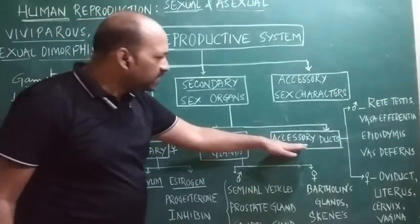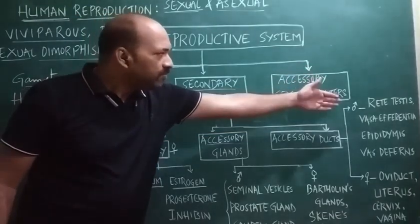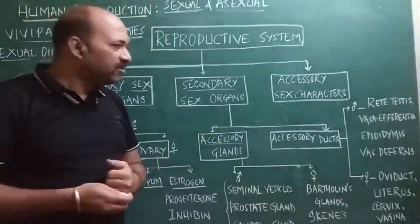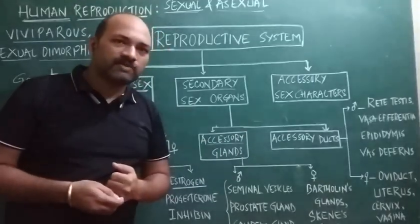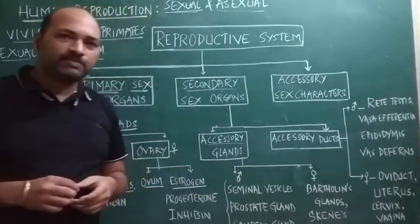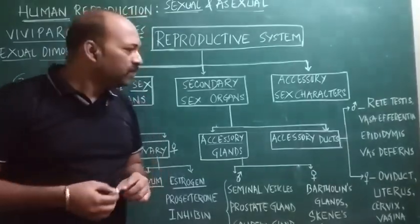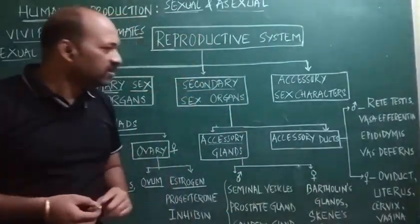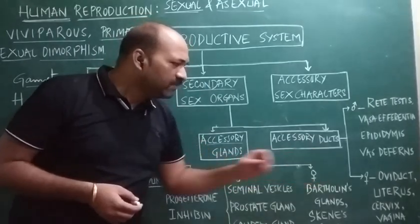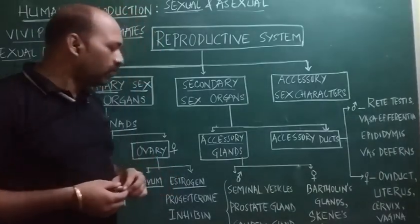Next are the accessory ducts. In the male reproductive system, the accessory ducts consist of the rete testis, vasa efferentia, epididymis, and vas deferens — four ducts which help in the conduction of the male gametes, that is sperm. In the female reproductive system, the ducts are the oviduct, uterus, cervix, and vagina, which help in the conduction of the female gametes, that is the ova.